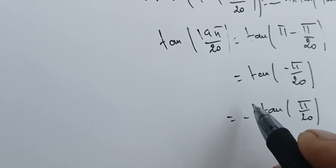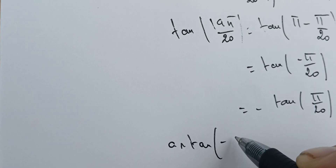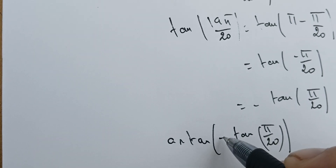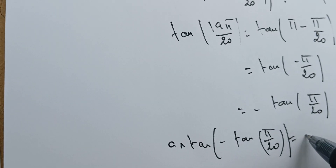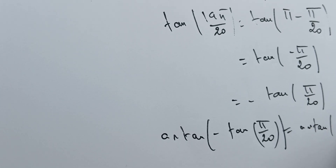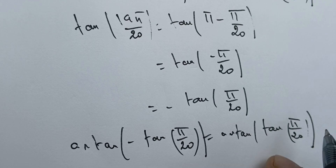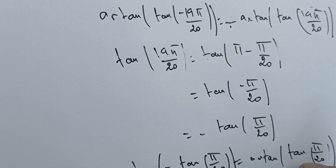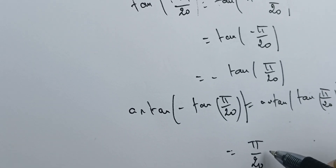Using the fact that arctangent is odd, we take this minus sign. Combined with the minus already outside, we get plus arctangent of tangent of π/20. Now, π/20 is in our interval (-π/2, π/2), and this means we have π/20.